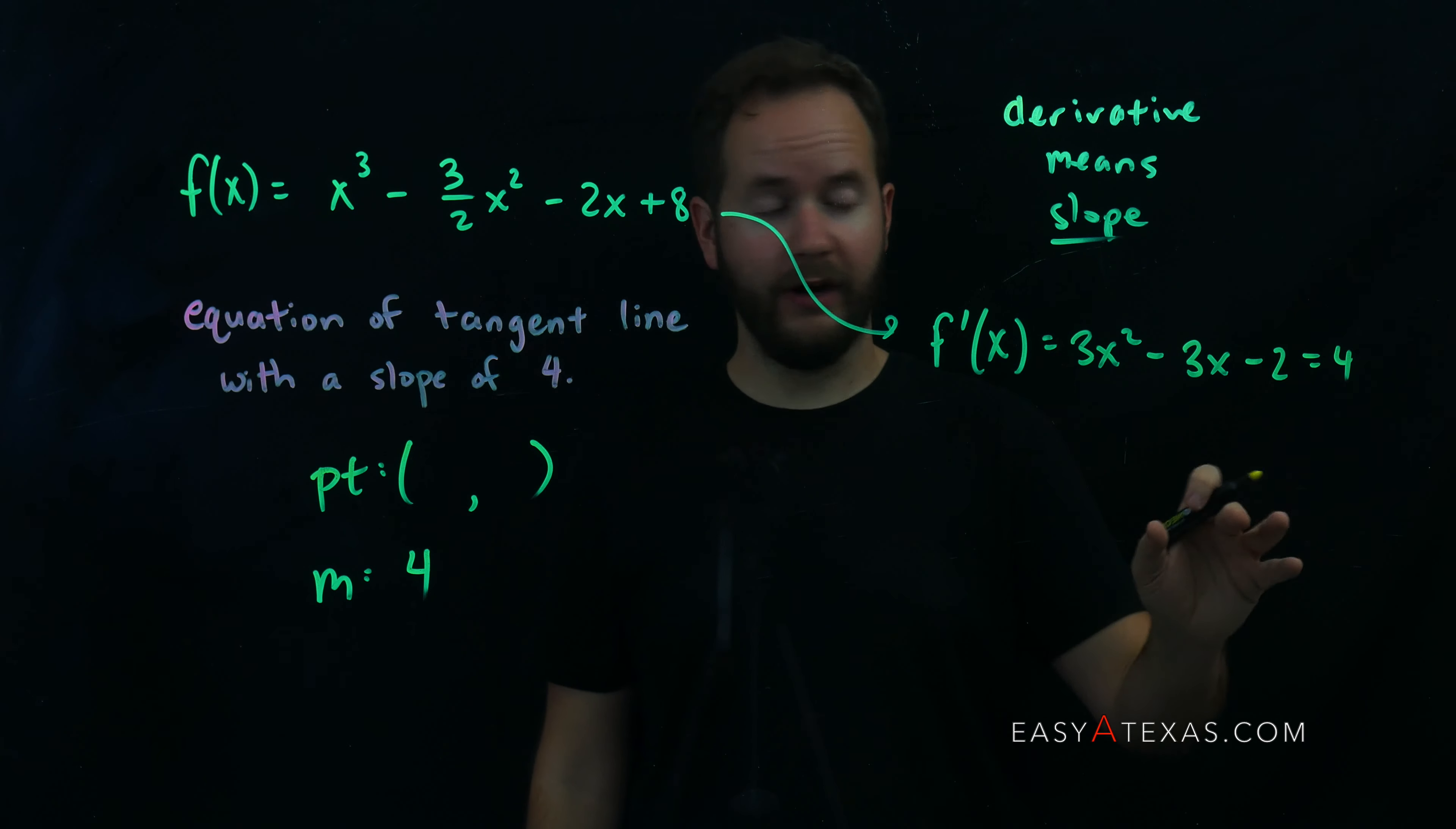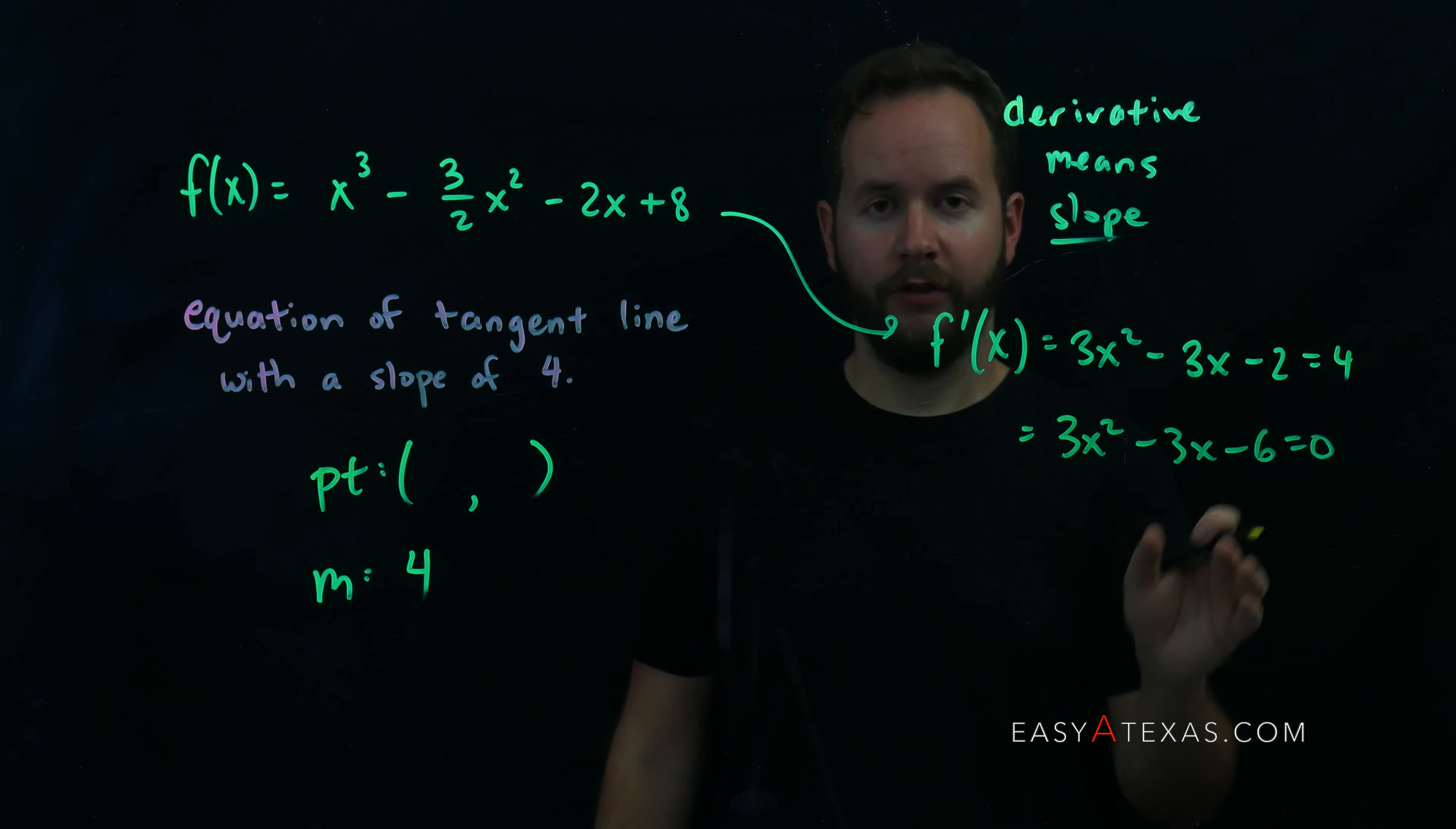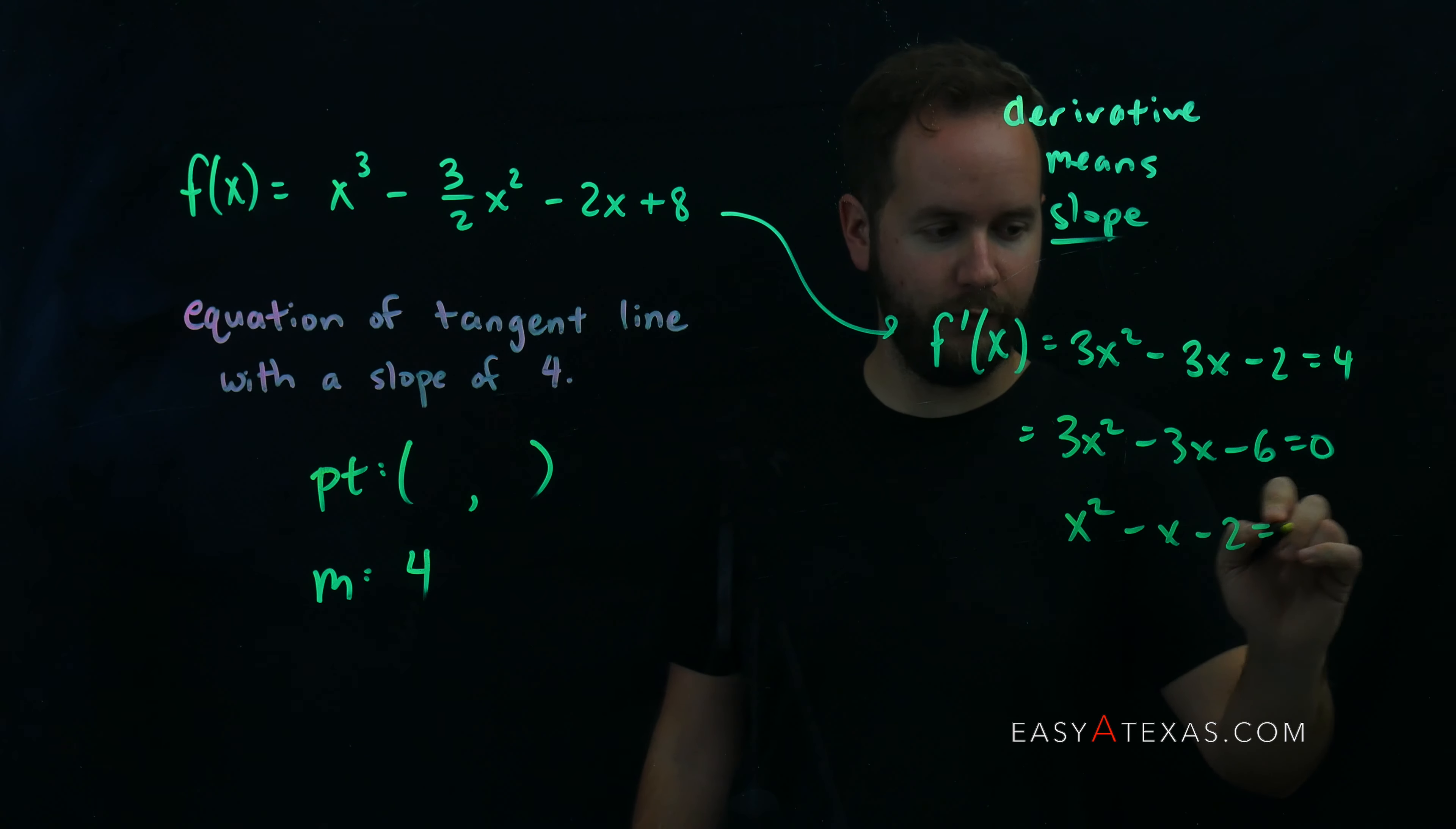Let's go ahead and start solving this for x. I'm going to subtract the 4 over from the left to the right, giving me 3x squared minus 3x minus 6 equals 0. Notice that there's a factor of 3, 3, and 6. A factor of 3 can be pulled out and divided through, so I'm going to be left with x squared minus x minus 2 equals 0.